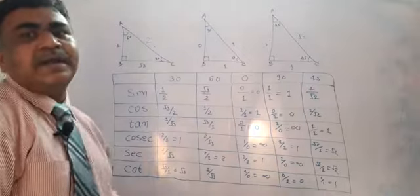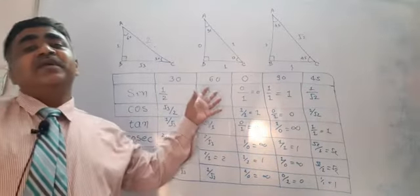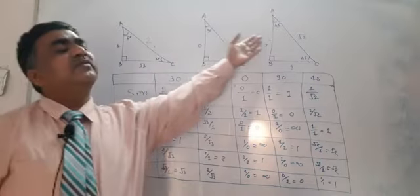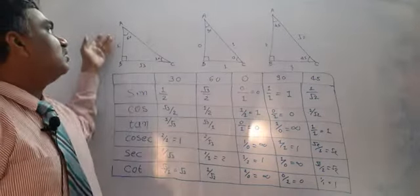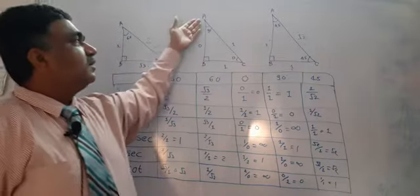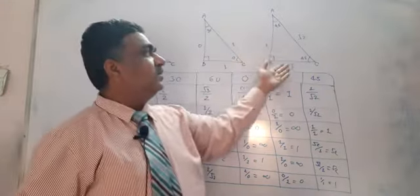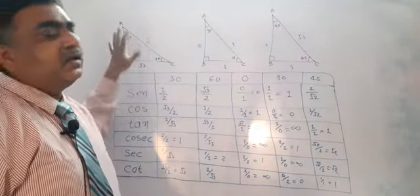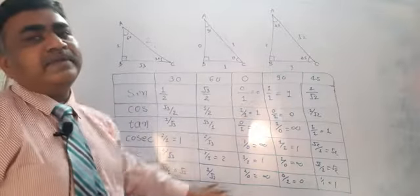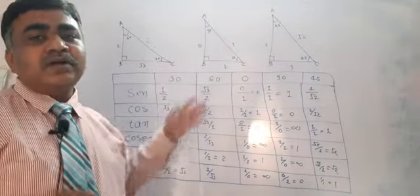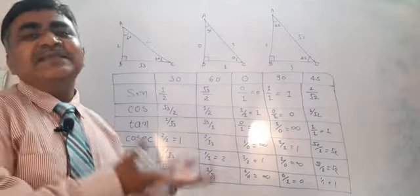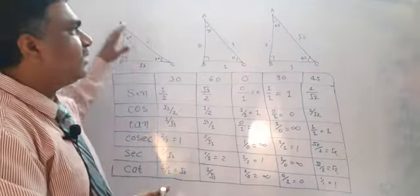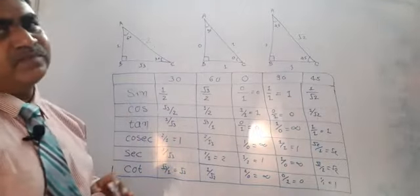So that was the idea of how to remember trigonometric values. Don't bother about memorizing all the values — just remember these three triangles with the values 1, 2, root 3, 0, 1, 1, and 1, 1, root 2. From these three triangles you can build the whole table. It's very easy to remember, so don't make it complicated. You just need to memorize these three triangles, not all the stuff. Thank you.